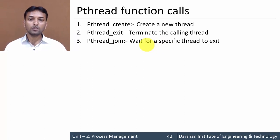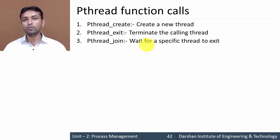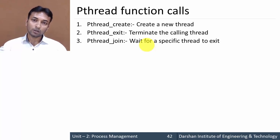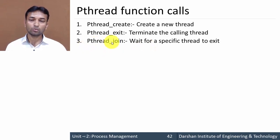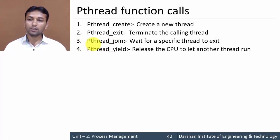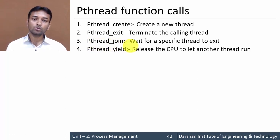The third system call is pthread_join. This system call is used to wait for a specific thread to exit. Sometimes a thread needs to wait for another thread to exit; in such cases the waiting thread calls pthread_join to wait for that specific thread.